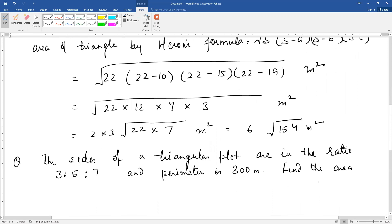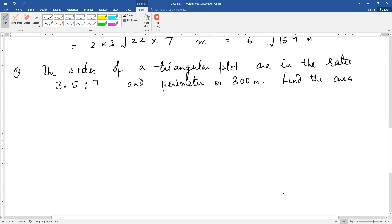Ab ek question lete hain, aapki textbook ka solved example 3 hai. Is tarah ke question bada important hota hai. The sides of a triangular plot are in the ratio 3 is to 5 is to 7 and perimeter is 300 meters. To ab kyonki ye ratio ye sides ka diya hai, to let the sides be 3x, 5x and 7x. Ab hum jaante hain, perimeter is equal to 300 meters ye question mein diya hai, yaani ki 3x plus 5x plus 7x equals 300.